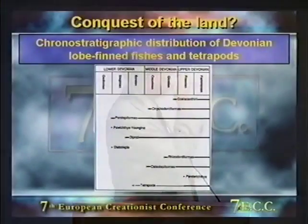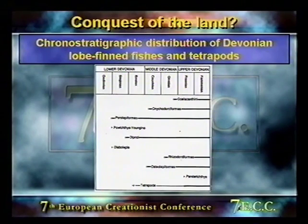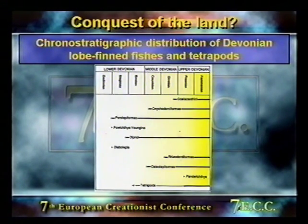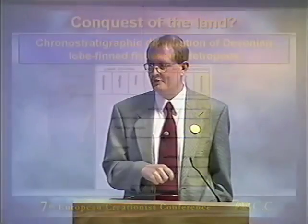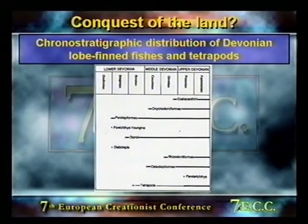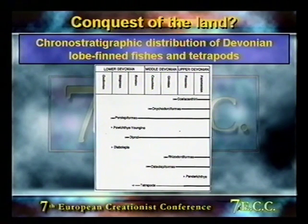To sum up on timing: the earliest tetrapod skeletal material is Upper Frasnian; there's trace fossil evidence suggestive of tetrapods back to at least the late Middle Devonian; and the panderichthyids — the most tetrapod-like of fishes — appear in the Lower Frasnian. This means the timing of the transition from fish to tetrapod is very tightly constrained. If there are genuine skeletal remains or trackways of tetrapods going back beyond that point, it makes them older than the fish from which they are presumed to have evolved.